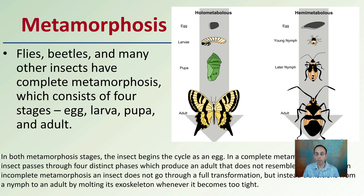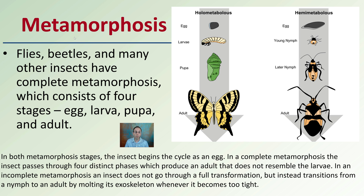This metamorphosis process — flies, beetles, and many other insects — undergo complete metamorphosis, which consists of four stages: egg, larval, and pupal to adult stage. The insect passes through four distinct phases, producing an adult that does not necessarily resemble the larval stage. This is why a good entomologist is needed, because the insect may look quite different across transitions — from nymph to adult — as it molts its exoskeleton whenever it becomes too tight in its original casing.